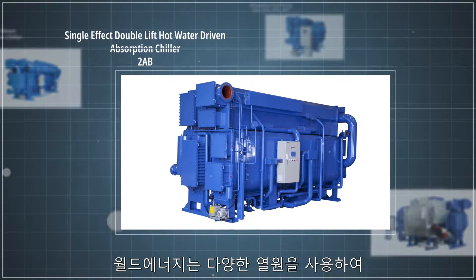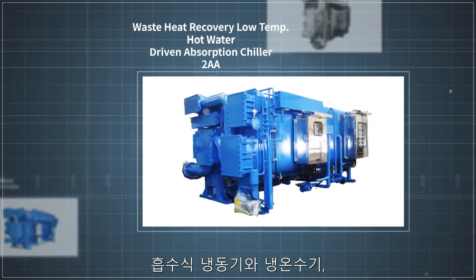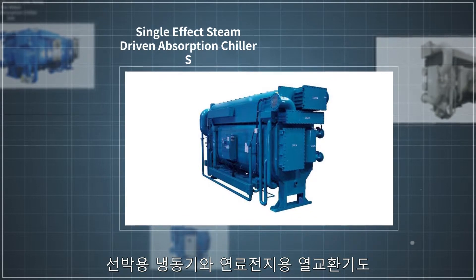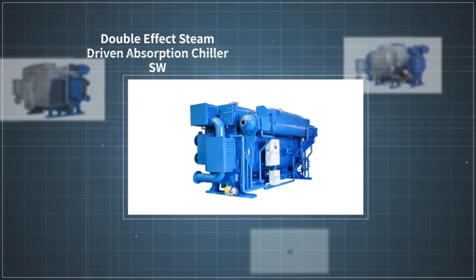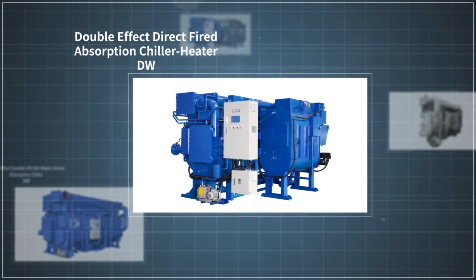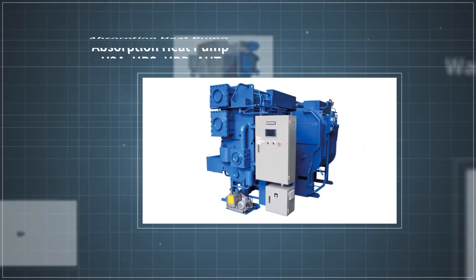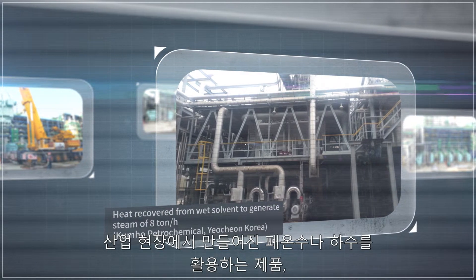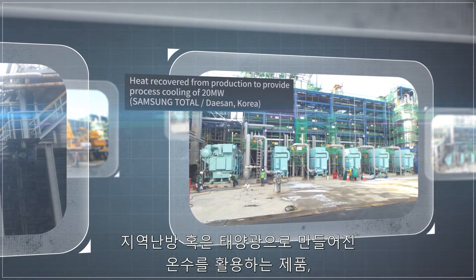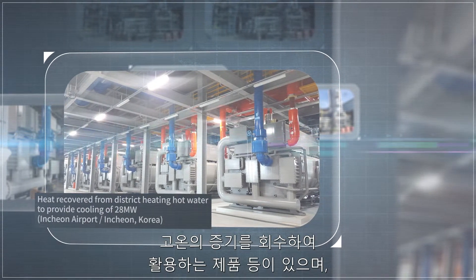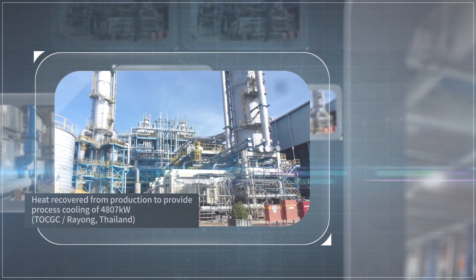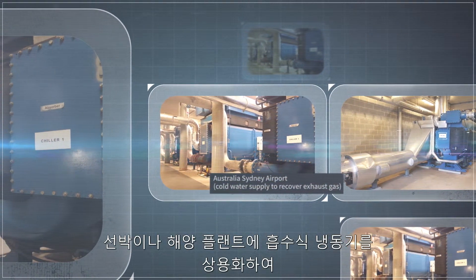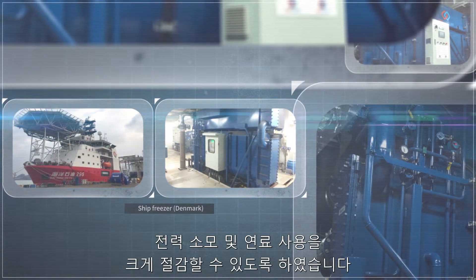World Energy produces many more absorption chillers and heaters driven by a variety of heat sources, as well as heat pumps. Maritime chillers and fuel cell heat exchange units are also available. Waste hot water from industrial processes, hot water from district heating and solar systems, and high-temperature steam are used to drive our chiller products. World Energy is the first in the world to commercialize absorption chillers for maritime and offshore plant applications, contributing to lowering electric and fuel consumption.